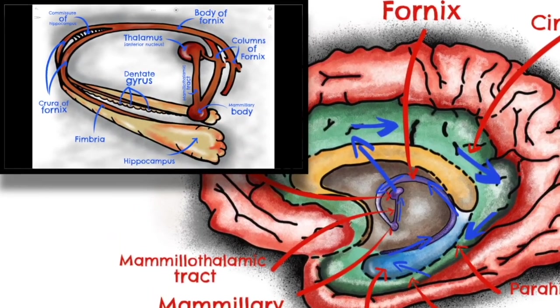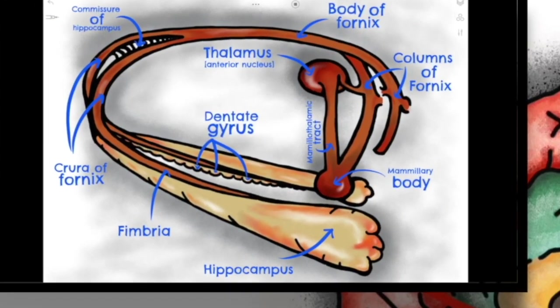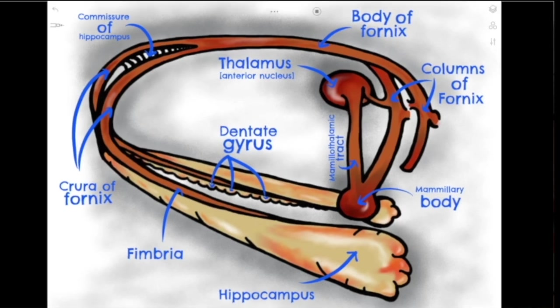Now let's look in a bit more detail at the hippocampus and fornix — follow the diagram as we go along. The fornix is the outflow tract from the hippocampus. The fimbriae of the fornix emerge from the medial surface of the dentate gyrus, which is part of the hippocampal formation. The fimbriae swing round and become the crura, and eventually the body of the fornix, which lies above the thalamus. This divides into the columns of the fornix, which enter into the mammillary body. You can then see the mammillothalamic tract connecting the mammillary body to the anterior nucleus of the thalamus.